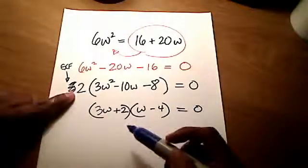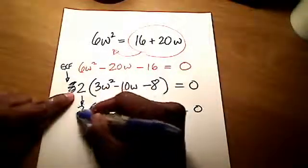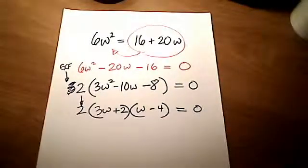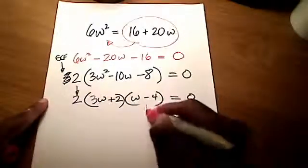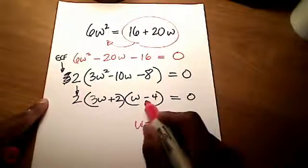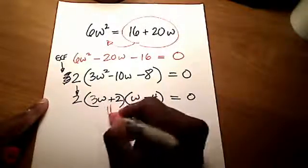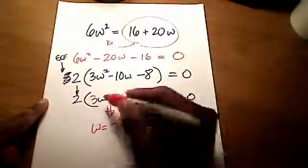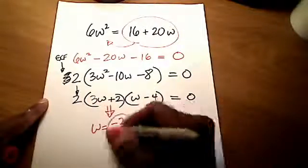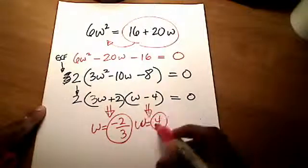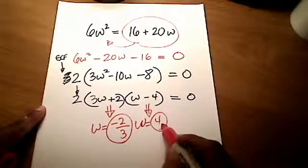Now, what about that 2 that we took out at the very beginning, that GCF? Well, that's still part of my equation here. That comes on down. But I want you to see that when we use the quote-unquote shortcut to come up with our answers here, that 2 has no effect in our answer. Okay, so the shortcut answer here was 4. The shortcut answer out of this one was, let's see, change that positive 2 to a negative 2. The 3 moves down to the bottom. So it turns out, guys, that these are my two answers here for w. Okay? These are my two answers. Negative 2/3 and a positive 4.